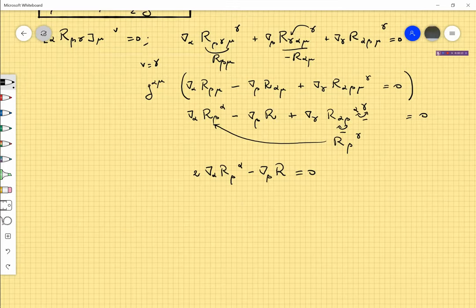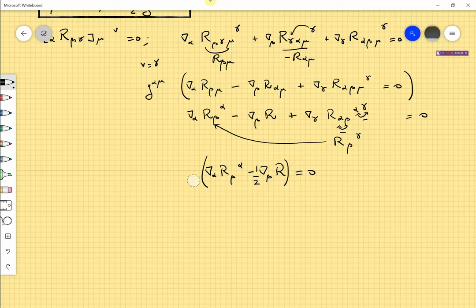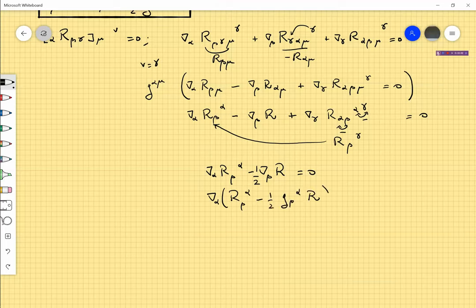Let me now take a common factor two. So I just get rid of the two. Let me write it like this. And this ∇_β, which I want to write as a total, as a divergence, as a covariant divergence, I can put it in this way, minus a half g_βα R, equal to zero.